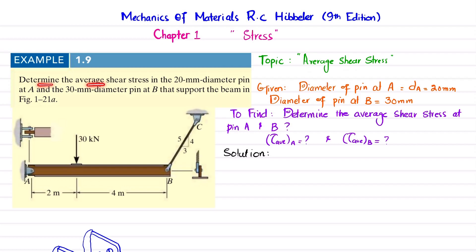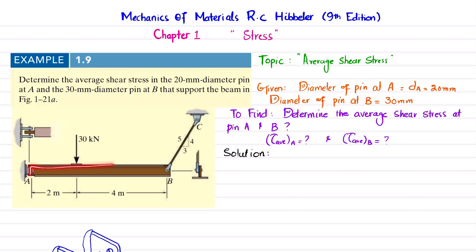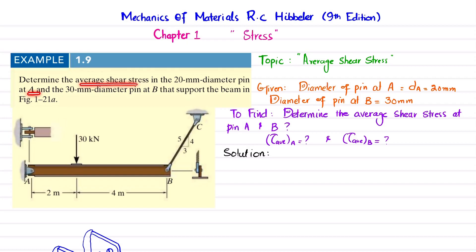The problem statement is: determine the average shear stress in the 20mm diameter pin at A and the 30mm diameter pin at B that support the beam in figure 1-21A. You can see this is the beam supported by a pin support at point A, and at point B we have a rope connected at pin support at C, with a point load of 30 kN. You have to determine the average shear stress at A and B.